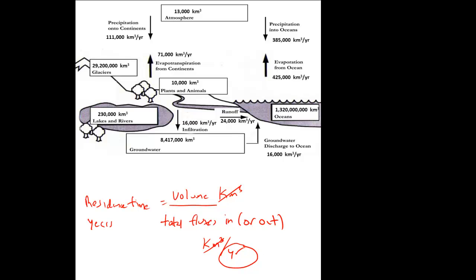For example, to find residence time of water in the atmosphere, take the volume of water in the atmosphere divided by the total fluxes either out of the atmosphere, in other words the total of those two numbers, or the total flux into the atmosphere, the sum of those two numbers. You could do it either way and you should get the same answer.